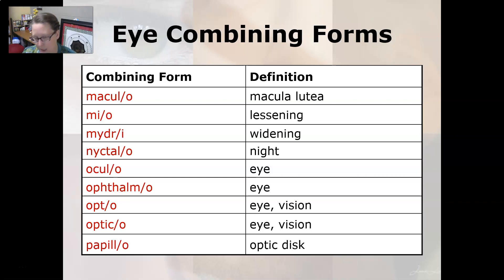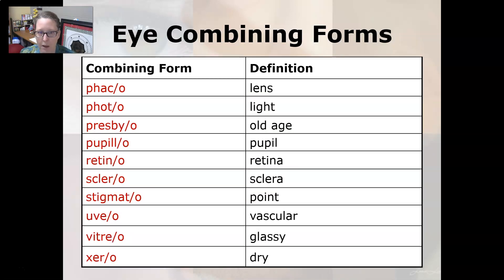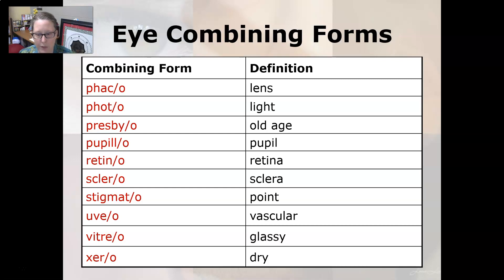Papillo means optic disc. Phaco means lens. Photo means light. Presbio means old age. Pupilo means pupil. Retino means retina. Sclero means sclera. Stigmato means points. Uveo means vascular. Vitrio means glassy. And xero means dry.